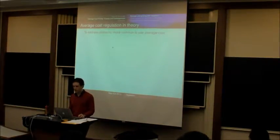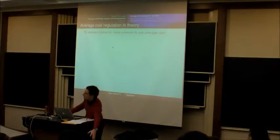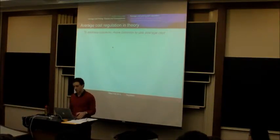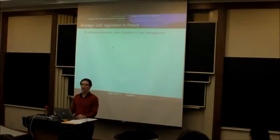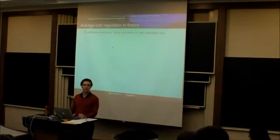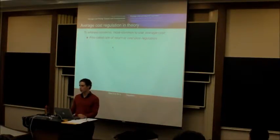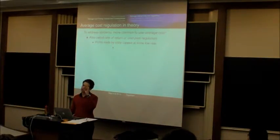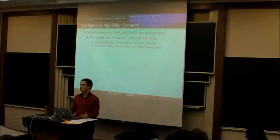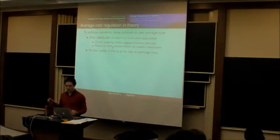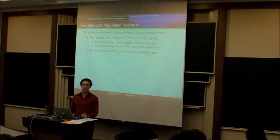To address some of these concerns in practice, what's used more often is average cost pricing. This is often called rate of return or cost plus regulation, because the utility is capped not literally to earn its average cost, but average cost plus some small profit. That's thought to be necessary to incentivize people to invest in that industry. So it's basically costs, including the cost of capital, meant to cover the natural return on the capital investment. A simple model of this would be to just cap prices at average cost.